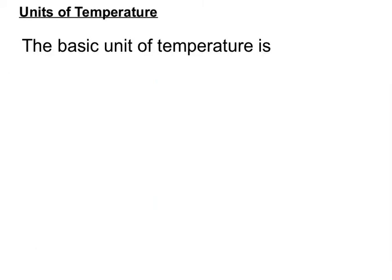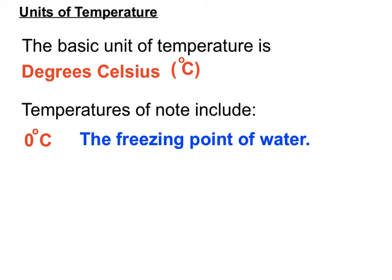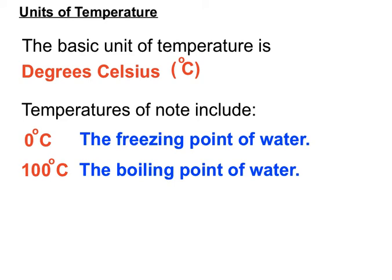Other than mass, we also have the units of temperature in this video. The basic unit of temperature is degrees Celsius, with the symbol °C. Key temperatures to know on the Celsius scale include zero degrees, which is the freezing point of water — the sort of temperature you get in the snow — and 100 degrees Celsius, which is the boiling point of water.